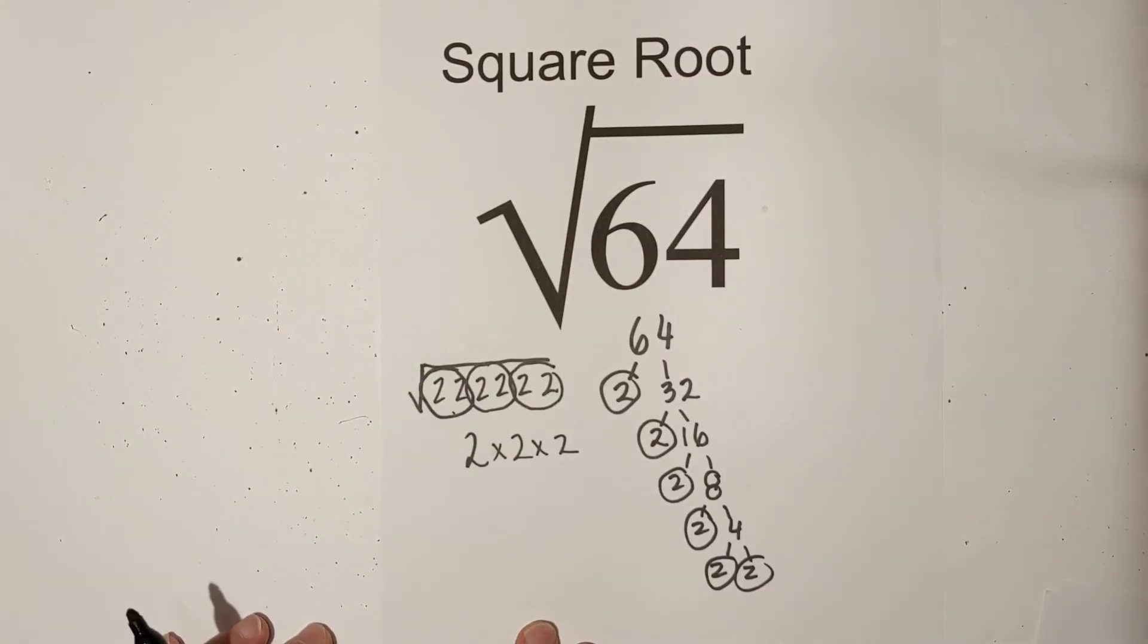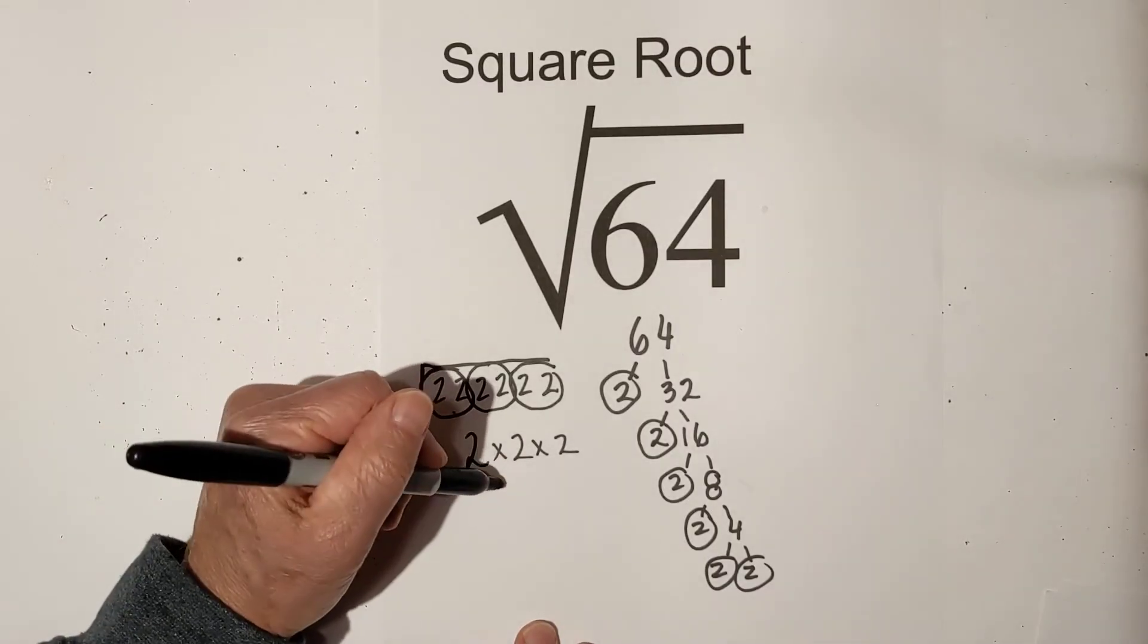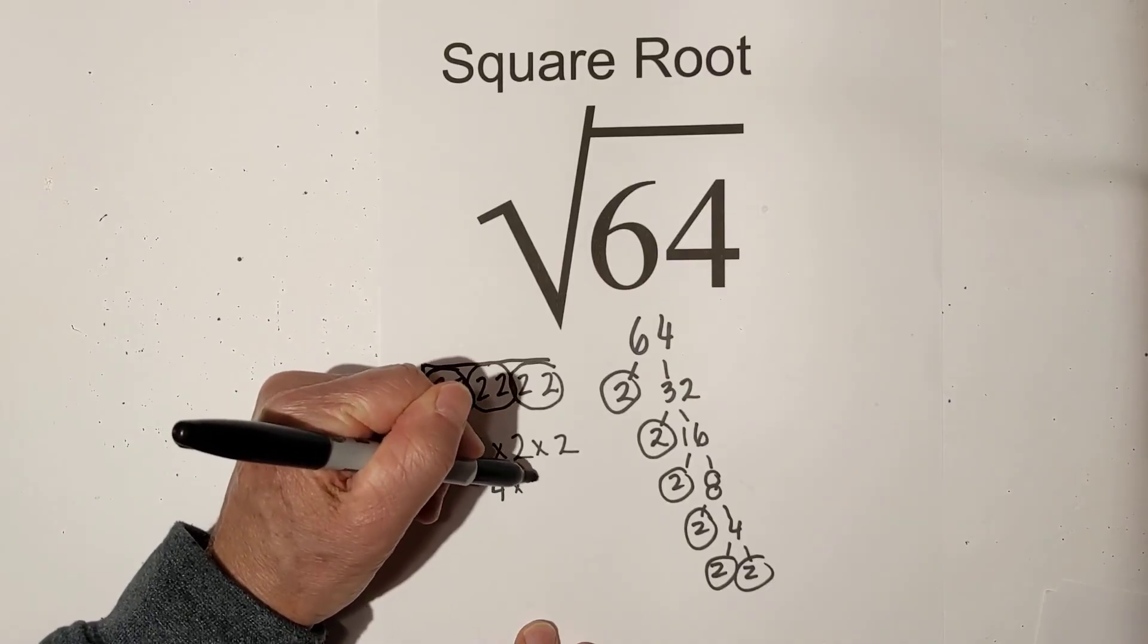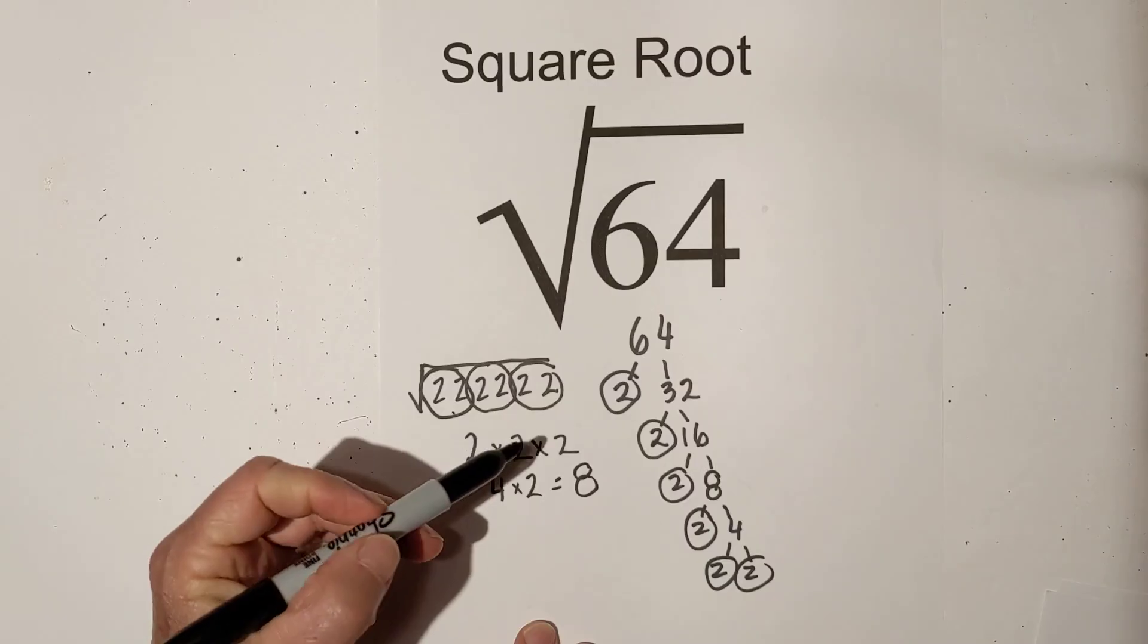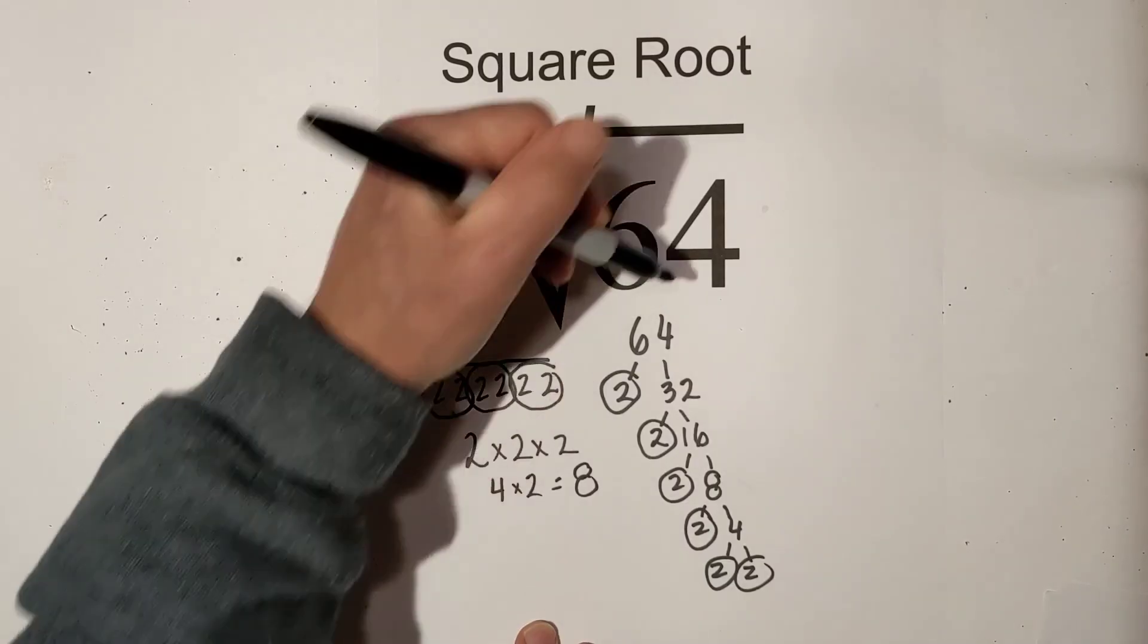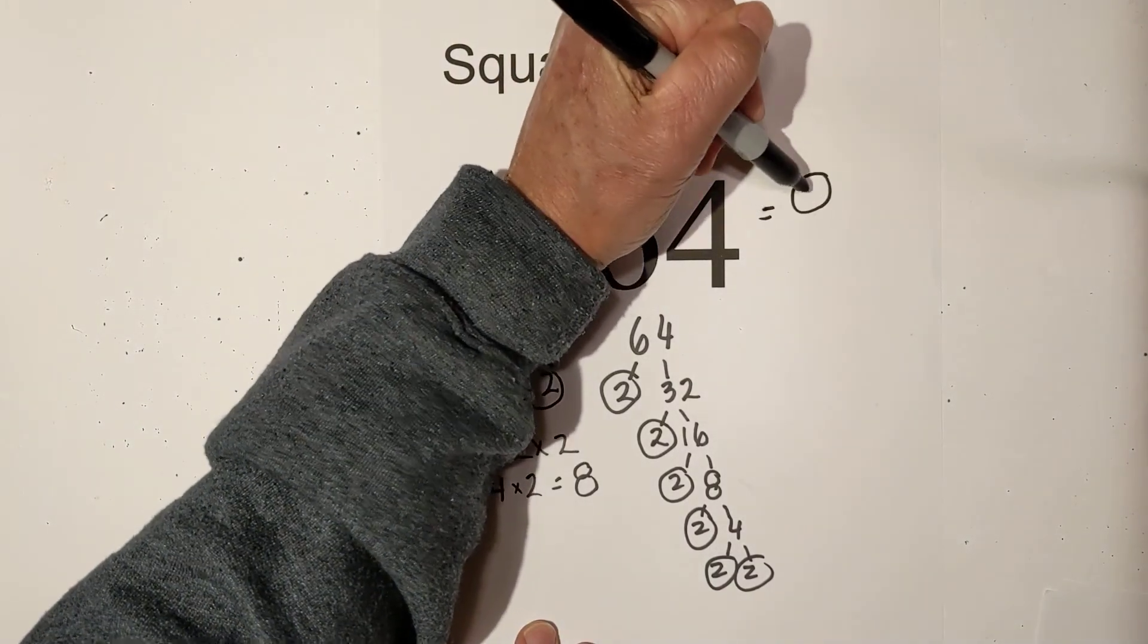And so then I just multiply this together. 2 times 2 is 4. Times 2 equals 8. So the square root of 64 equals 8.